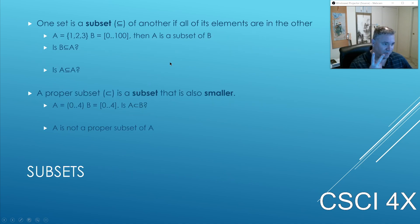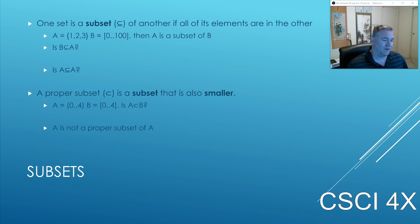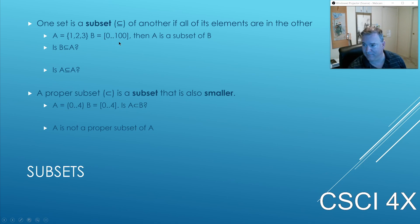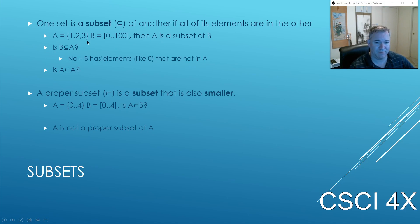Subset takes two sets as input but returns true or false — it doesn't return a set like the other operations. It returns true if all the elements of the first set are in the second one. So if A is {1, 2, 3} and B is the numbers from zero to a hundred, A is a subset of B because all elements of A — 1, 2, and 3 — are found within B. B is not a subset of A because there are elements in B that are not found in A.